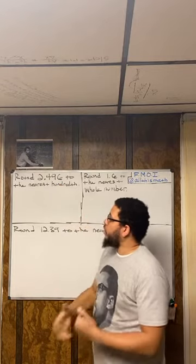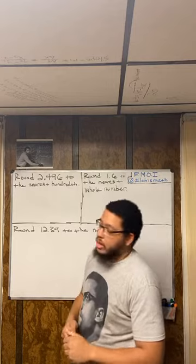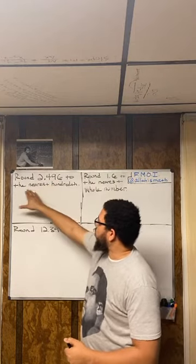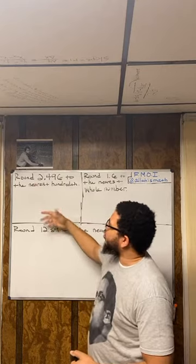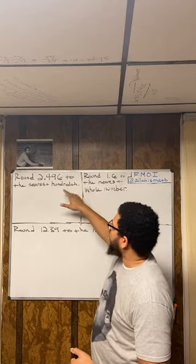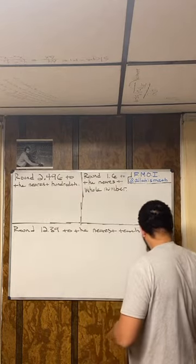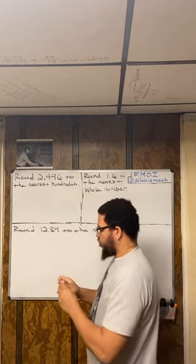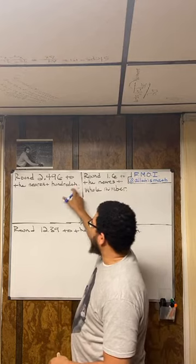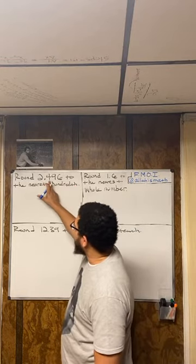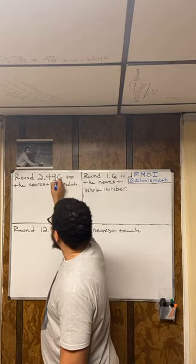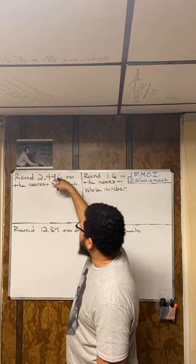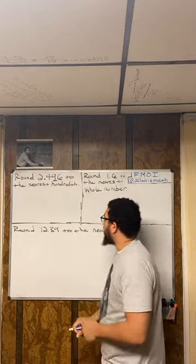The first thing you have to do is recognize your place value. Look at the instructions — I'm rounding to the nearest hundredth. So first I find the hundredths place: to the right of the decimal, that's the tenths, and this right here is the hundredths place. That place is really important.